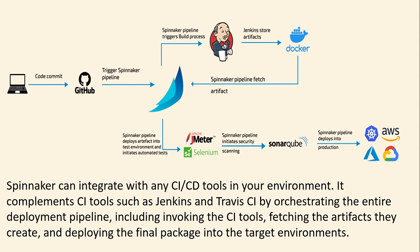You can use Spinnaker in your CD pipeline to deploy applications. Spinnaker can integrate with any CI/CD tools in your environment. It complements CI tools such as Jenkins and Travis CI by orchestrating the entire deployment pipeline, including invoking the CI tools, fetching the artifacts they create, and deploying the final package into the target environments.